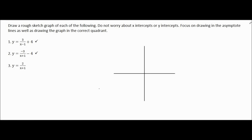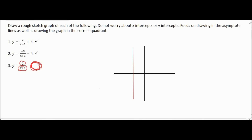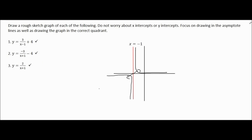For number three, this number tells us which quadrants we are in. There is no plus or minus for the vertical shift, so the graph has not moved up or down. The x plus one tells us the graph has moved one place to the left — it's next to the x value, so the x values have been shifted one place left. We draw the asymptote for that, then draw the two halves in the correct quadrants, and add the equation of the asymptote.